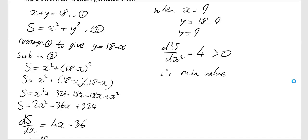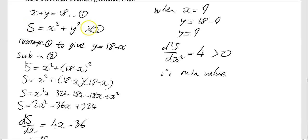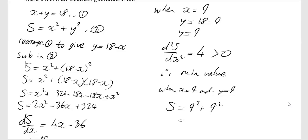Reading the question again: prove it is a minimum using differentiation and find the minimum value of the sum of their squares. I'll use equation 2 to find the minimum value of s. When x equals 9 and y equals 9, s equals 9² plus 9², which is 81 plus 81, which equals 162.